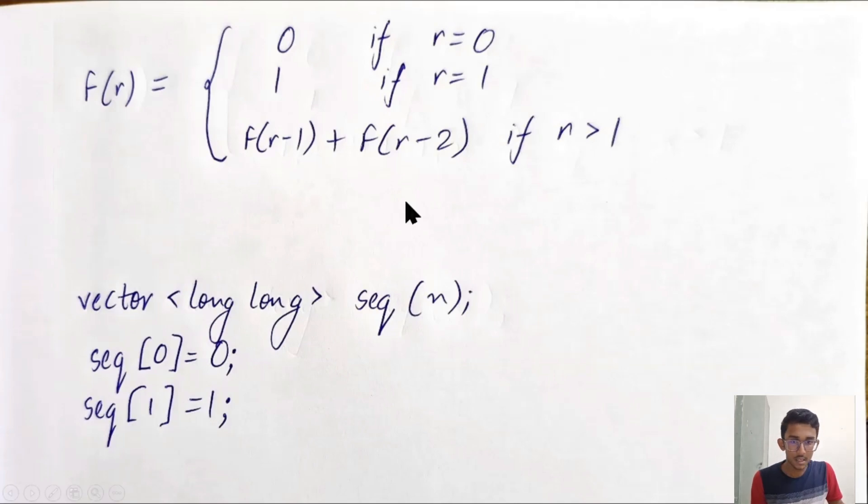Now for coding this into C++, we must store each F(r) for all r's from 0 till n minus 1, because we need all the previous terms for calculating the later terms. For example, for calculating the sixth term, I need the fourth and the fifth term. So I must store the fourth term somewhere. For this purpose, I am going to use vector here.